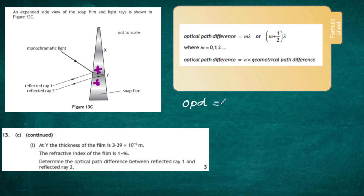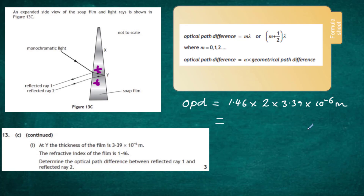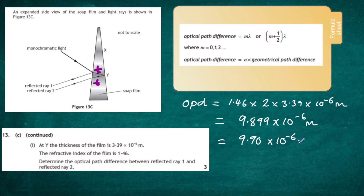So the optical path difference (OPD) equals n times 2t, which is 1.46 multiplied by 2 times 3.39 times 10 to the minus 6 meters. Working that out gives 9.899 times 10 to the minus 6 meters, which to three significant figures is 9.90 times 10 to the minus 6 meters. That is the optical path difference traversing the soap film at position Y.